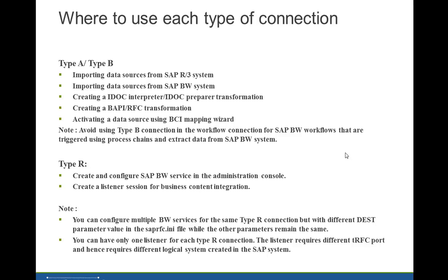Type R would be used only in two cases. When you configure an SAP BW service in the Administration Console, you need to specify the program ID or destination for the Type R entry. When you create a listener for Business Content Integration under the BCA framework — a component of PowerExchange for SAP NetWeaver — the listener session requires a Type R connection. In both these cases, we run an RFC server program and register it at the SAP Gateway. One thing to note: you can have multiple BW services for the same Type R connection for load balancing, but each listener must have an individual Type R connection, meaning each listener needs a different logical system created in the SM59 transaction.